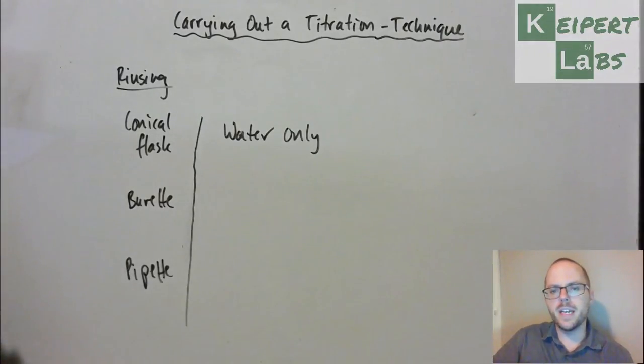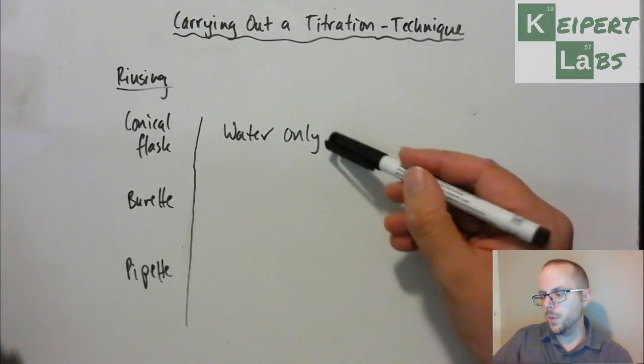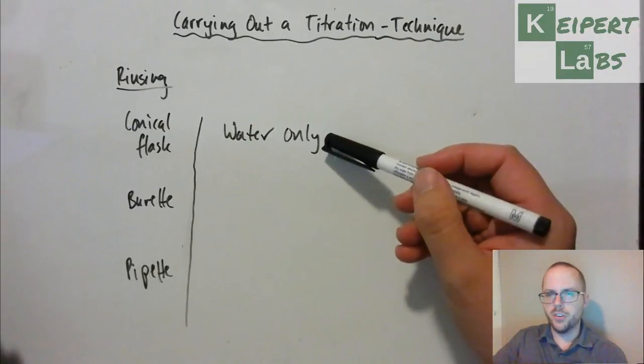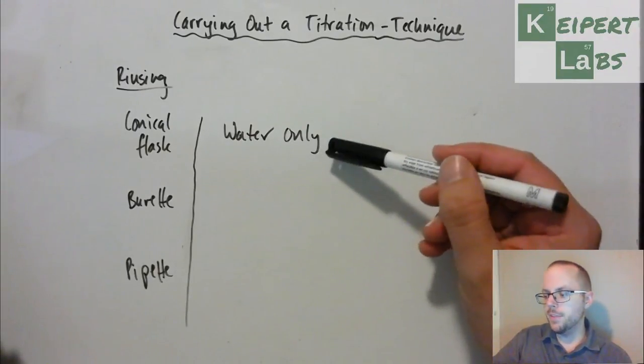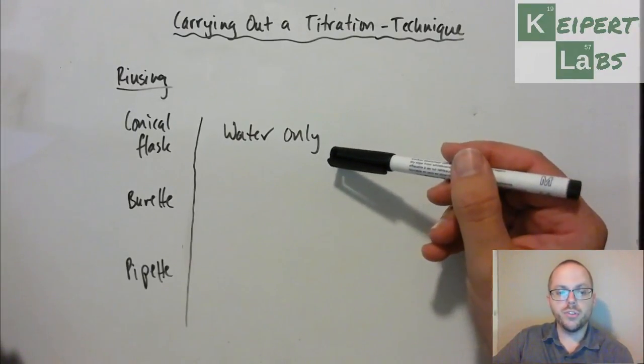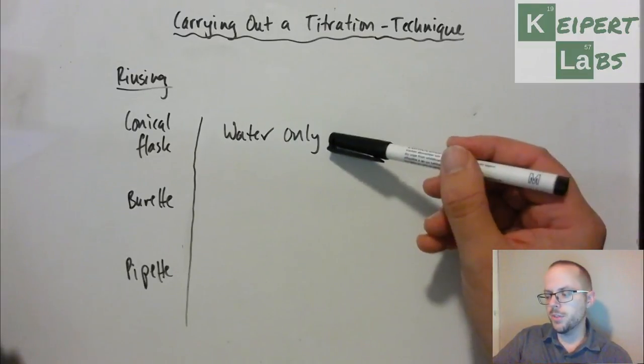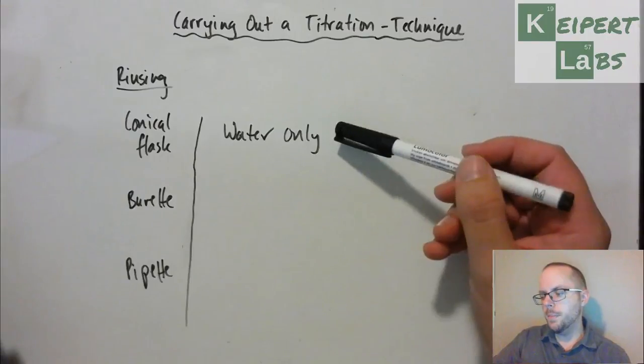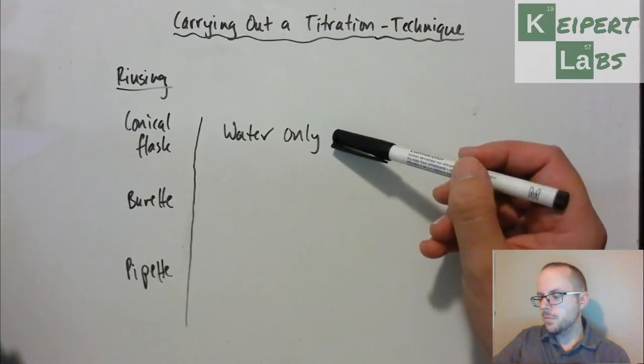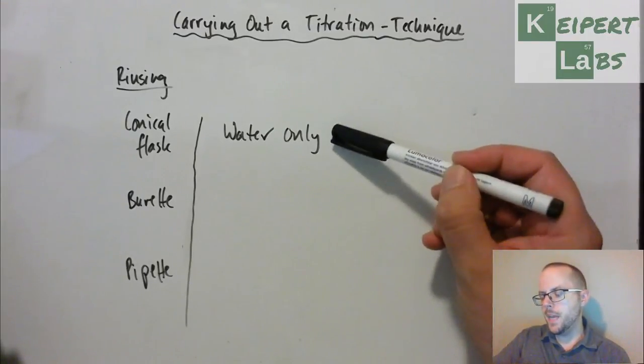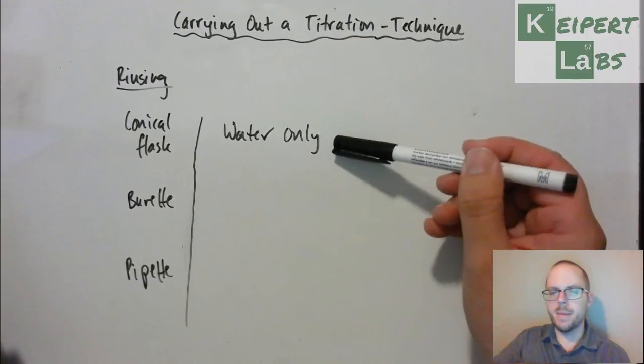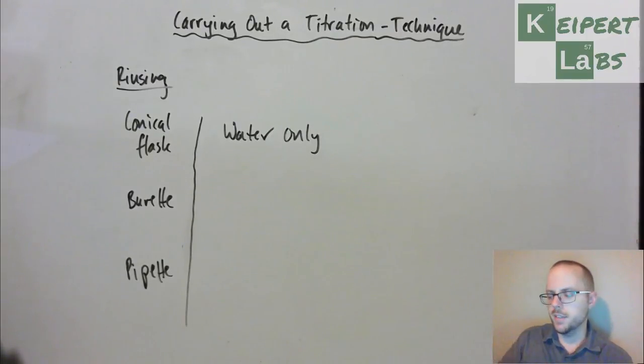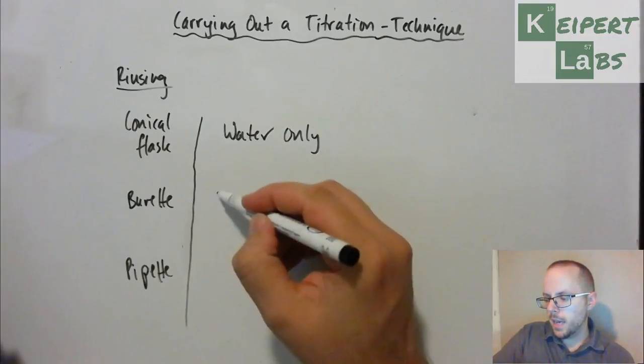So what we do then is that we only rinse a conical flask with water. This will help to clean away any other contaminants. Anything that was in the flask before you did your titration or any leftover residue from a previous trial of a titration, because what you'll see when we do titrations is that we do multiple trials so that we can get an average. So it will rinse away anything that's contaminating, but it won't potentially jeopardise your existing titration.